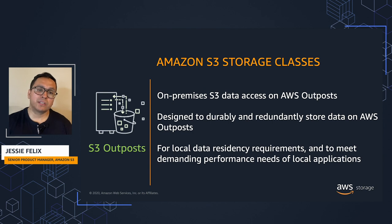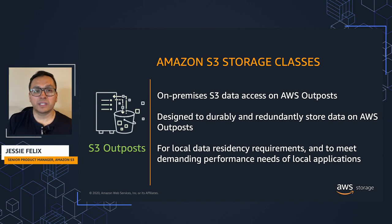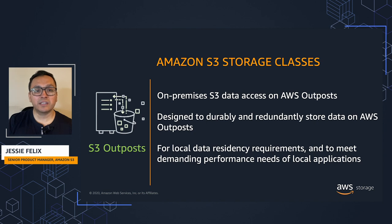S3 Outposts is for workloads with local data residency requirements and to satisfy demanding performance needs by keeping data close to on-premises applications. S3 Outposts is only available on AWS Outposts. It delivers object storage to your on-premises environment with the same S3 APIs, and is designed to durably and redundantly store data across multiple devices and servers on your Outpost.